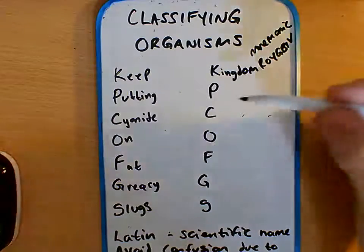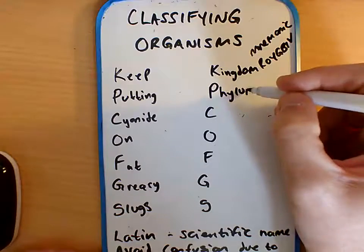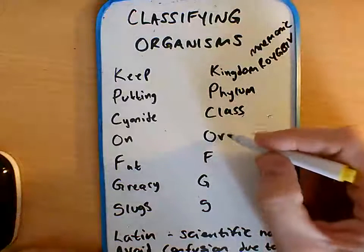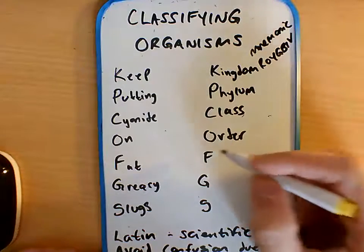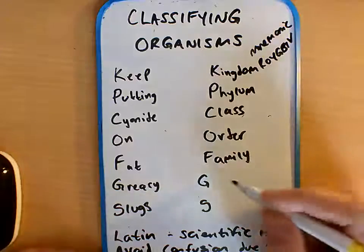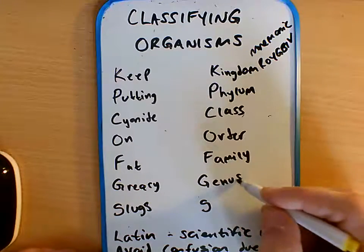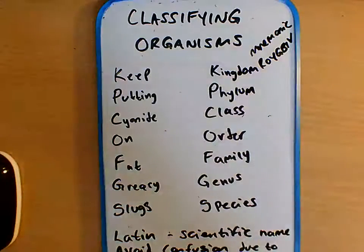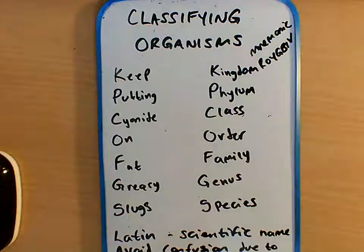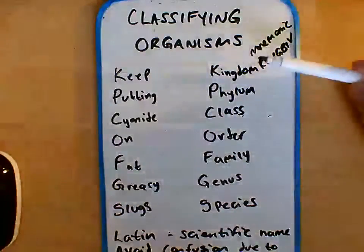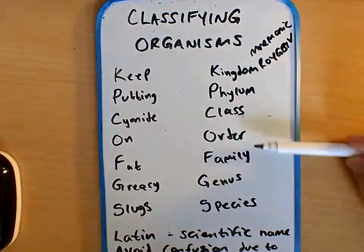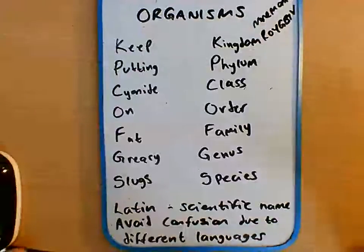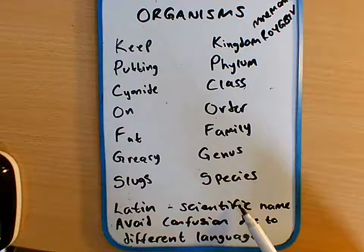The next group is the phylum, then the class, the order, the family, the genus, and finally the individual species. So you can see we're working our way down from a very big, important group into all these subcategories, eventually leading to the individual species itself.